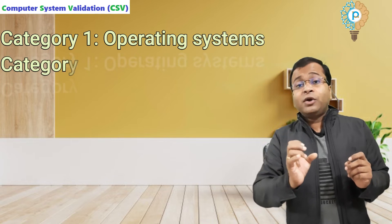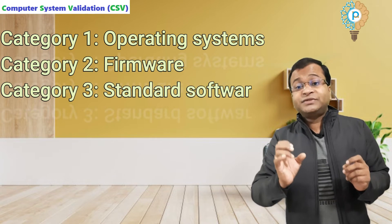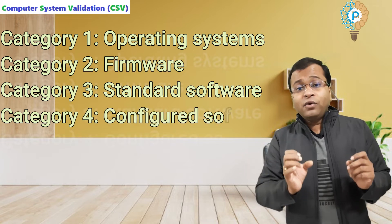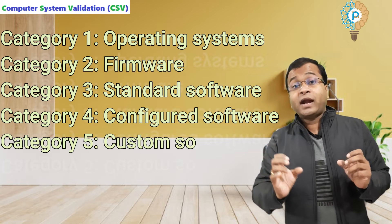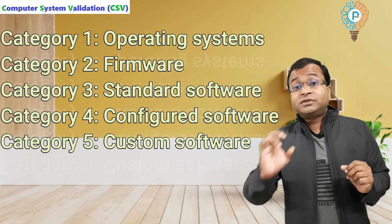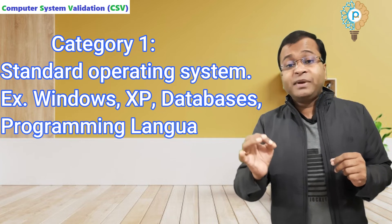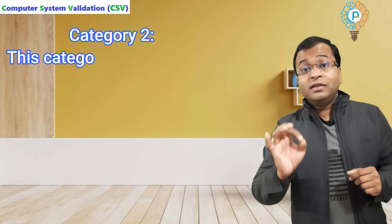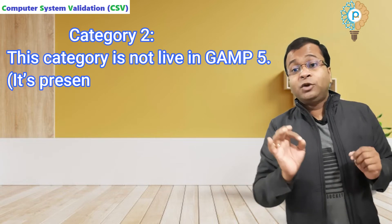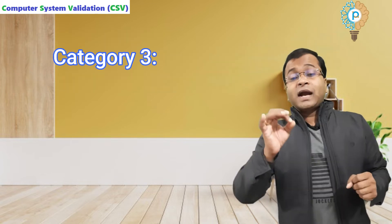Category 1 is the operating system. Category 2 is the firmware. Category 3 is the standard software. Category 4 is the configured software, and Category 5 is the custom software. Now I am explaining each category. First is Category 1: standard operating systems like Windows XP, database, and programming languages. Category 2 is not live in the GAMP 5 guideline; it was present in the old version of GAMP 4.